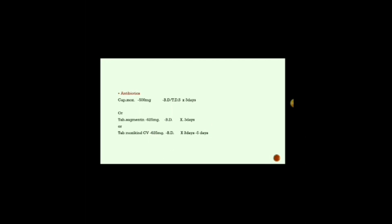For antibiotics, capsule MOX 500 mg twice or thrice a day can be given depending on the severity for 3 days. Tablet Augmentin which is a combination of amoxicillin and clavulanic acid 625 mg can be given. Moxikind is the same combination with a different trade name.